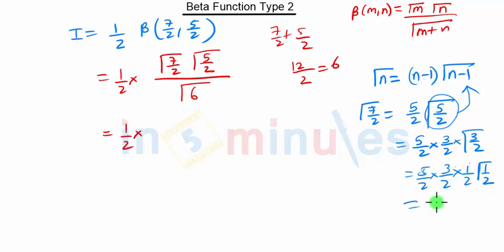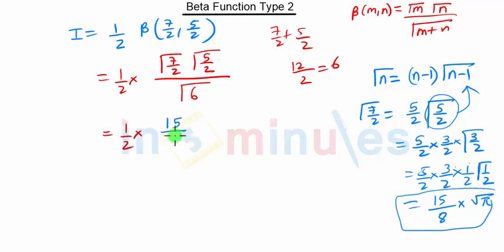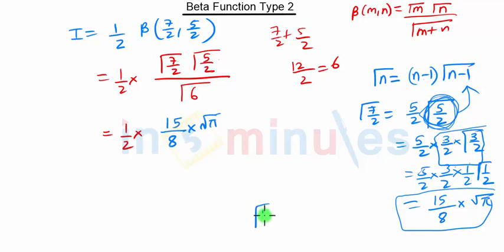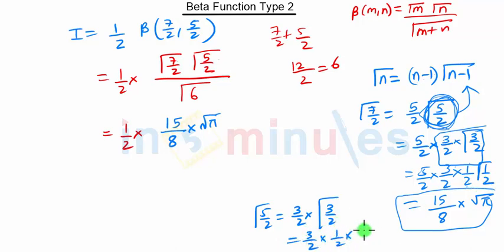Calculating gamma of 7 by 2: 5 into 3 is 15, 2 into 2 into 2 is 8, and gamma of 1 by 2 is root pi. So gamma of 7 by 2 is 15 by 8 into root pi. For gamma of 5 by 2, it is 3 by 2 into gamma of 3 by 2, which is 3 by 2 into half into root pi, giving 3 root pi by 4.